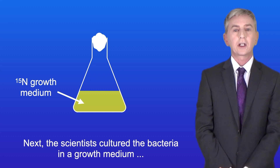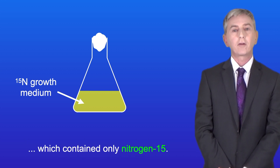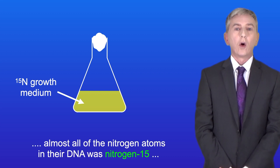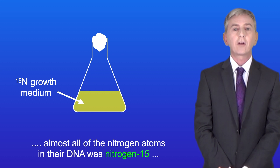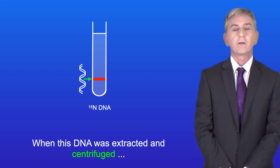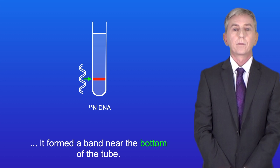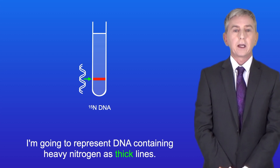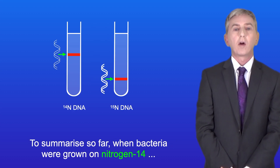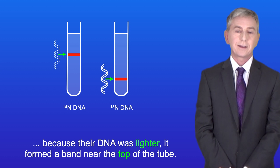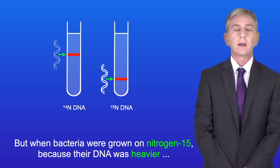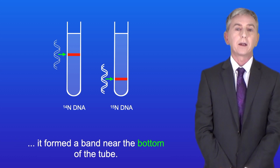Next, the scientists cultured the bacteria in a growth medium which contained only nitrogen-15. After the bacteria had reproduced many many times, almost all of the nitrogen atoms in their DNA was nitrogen-15 — heavy nitrogen. When this DNA was extracted and centrifuged, it formed a band near the bottom of the tube. I'm representing DNA containing heavy nitrogen as thick lines. So to summarize: bacteria grown on nitrogen-14 produced lighter DNA forming a band near the top, while bacteria grown on nitrogen-15 produced heavier DNA forming a band near the bottom.